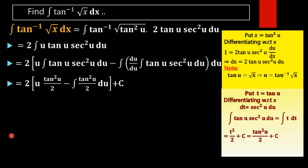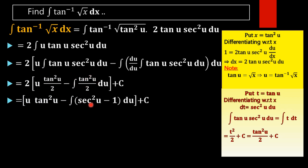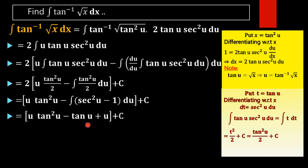This gives u·tan²(u) minus ∫tan²(u)·du. Now tan²(u) is rewritten using the identity sec²(u) - tan²(u) = 1, so tan²(u) = sec²(u) - 1. Thus: u·tan²(u) minus ∫(sec²u - 1)·du = u·tan²(u) - tan(u) + u + C.